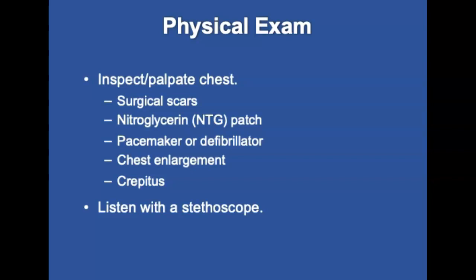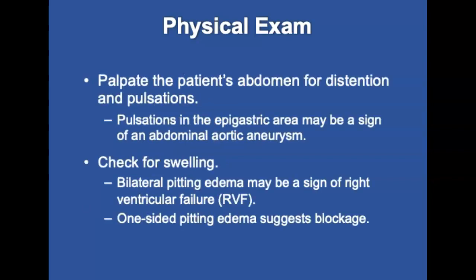Check for chest enlargement or a barrel chest such as with COPD, and observe for any signs of crepitus. Listen to the chest with a stethoscope for crackles or wheezes, which may indicate left ventricular failure with pulmonary edema. Inspect and lightly palpate the patient's abdomen for distension and pulsations — strong pulsations in the epigastric area may be a sign of an abdominal aortic aneurysm. Check for swelling in the patient's arms, hands, feet, and ankles. Bilateral pitting edema may be a sign of right ventricular failure, while pitting edema limited to one side of the body suggests a blockage in a major vein.